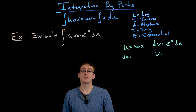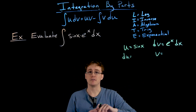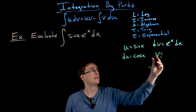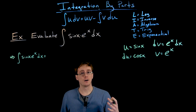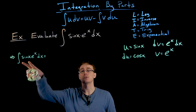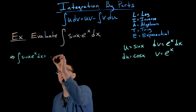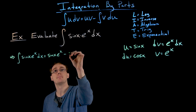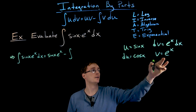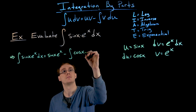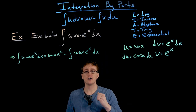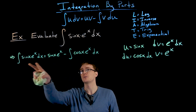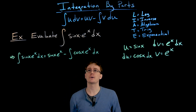From our choices: du equals cosine of x dx, and v equals e to the x. By the integration by parts formula, the integral of sine of x times e to the x dx equals sine of x times e to the x minus the integral of cosine of x times e to the x dx. We've completed one iteration but the new integral is still complicated, requiring integration by parts again.